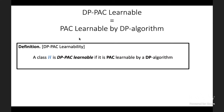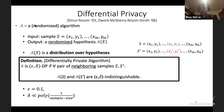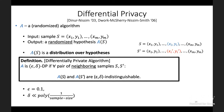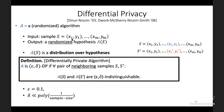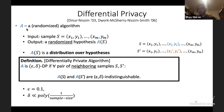To clarify: A(S) is a distribution over hypotheses, since the algorithm is randomized. Each output is a hypothesis — a Boolean function. The algorithm gets an input sample and produces a Boolean function as output. Differential privacy means that whenever you change the input at one point, the output distributions remain roughly the same in this precise (epsilon, delta) sense.